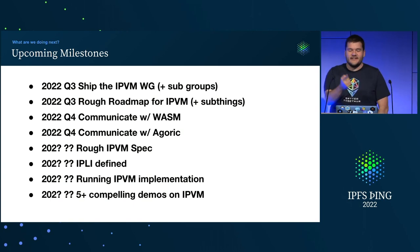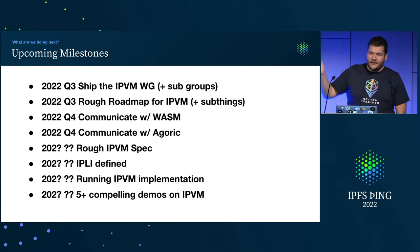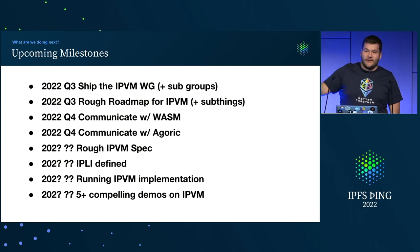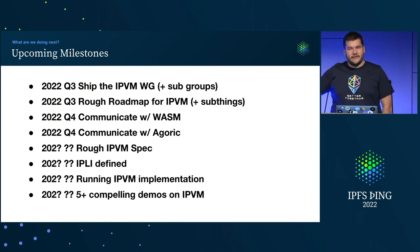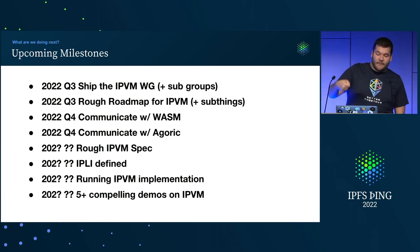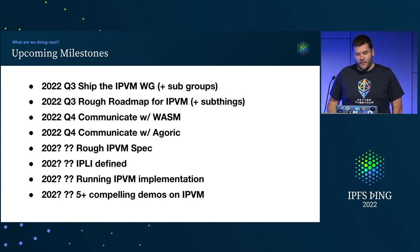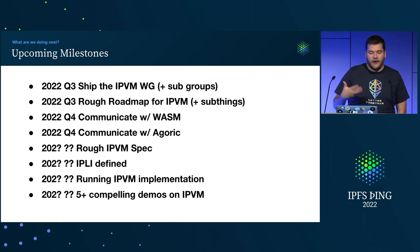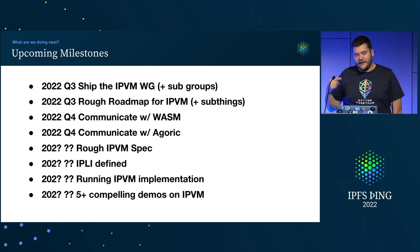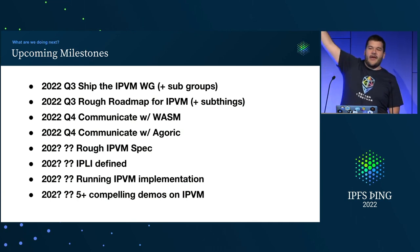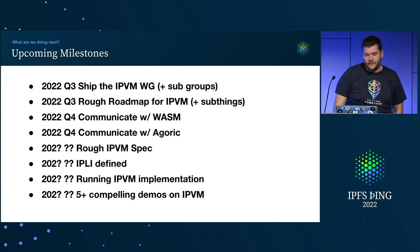We want to define the linked invocation — linked computation layer — and have a running IPVM implementation with some strong, compelling demos. We need to set some dates there, but I was comfortable putting some question marks because we're way ahead on the working group formation and we're pretty excited about the tracks of work.